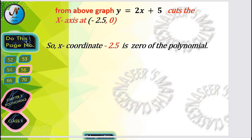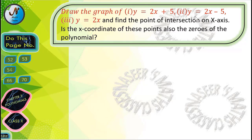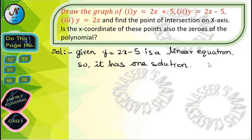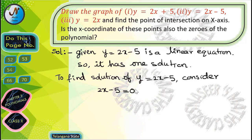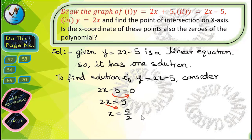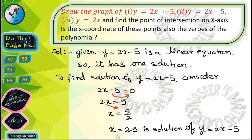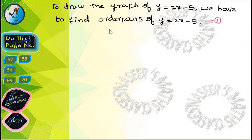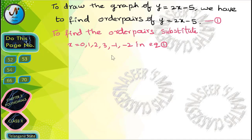Now we solve the second problem: y = 2x-5 is a linear equation with one solution. To find it, consider 2x-5 = 0. Transpose -5 to get 2x = 5, then x = 5/2. After simplification, x = 2.5, which is the solution of y = 2x-5. To draw the graph we find ordered pairs by substituting x = 0, 1, 2, 3, -1, -2.